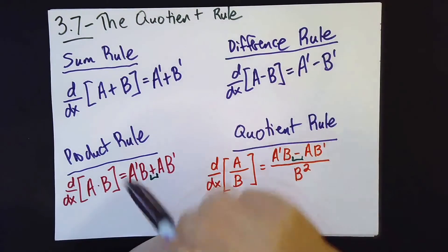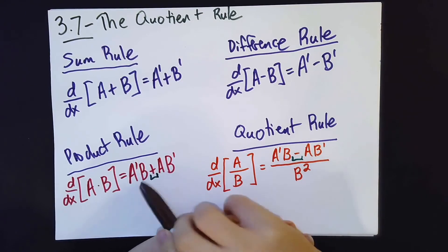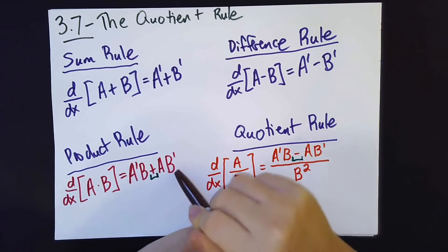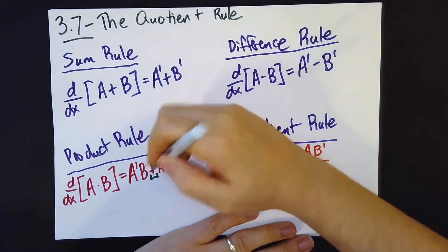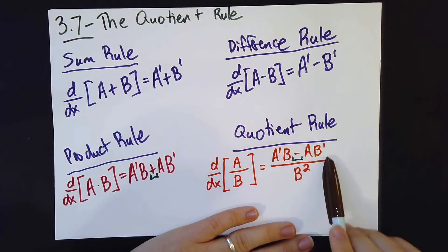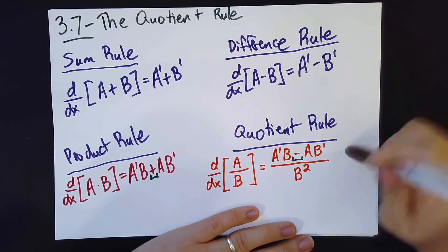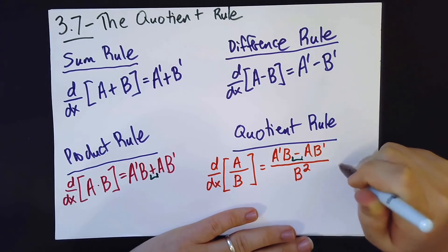Now, the product rule has addition here, so you could actually write this rule either direction. However, you'll notice I always write the product rule a prime b plus a b prime, and the reason for that is to match the order of the quotient rule. This rule I must write in exactly this order, or it will not work.